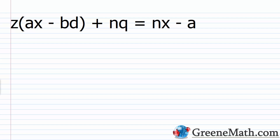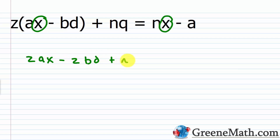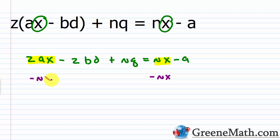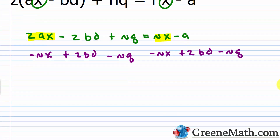Now suppose we want to solve this for X: Z times the quantity AX minus BD plus NQ equals NX minus A. I have an X here and an X here. When X appears on both sides, I need to get all terms with X on one side and everything else on the other. So let's distribute Z to each term inside the parentheses: ZAX minus ZBD plus NQ equals NX minus A.